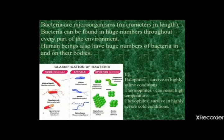Now let's start with bacteria. Here are colorful pictures — first is red, second is purple or blue, third is green. In the first picture you can observe rod-type creatures. In the second picture there are spirals, comma shapes, and sigma-shaped creatures. In the third picture they are round in shape — in pairs, in tetrads, in clusters, or in series. These are the different forms in which bacteria are available in the environment.